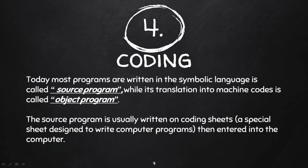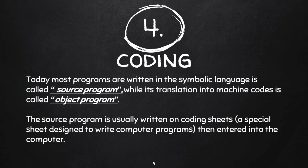Today most programs are written in symbolic language, called source code. Whatever program we write in QBasic — like PRINT, INPUT, CLS — and in C programming — printf, scanf, clrscr — that is called symbolic language, called source code. When it is translated into machine code, it is called object code. After we click the run button, the program written in the programming language is converted into machine code in 0 and 1 form — that is called object code.